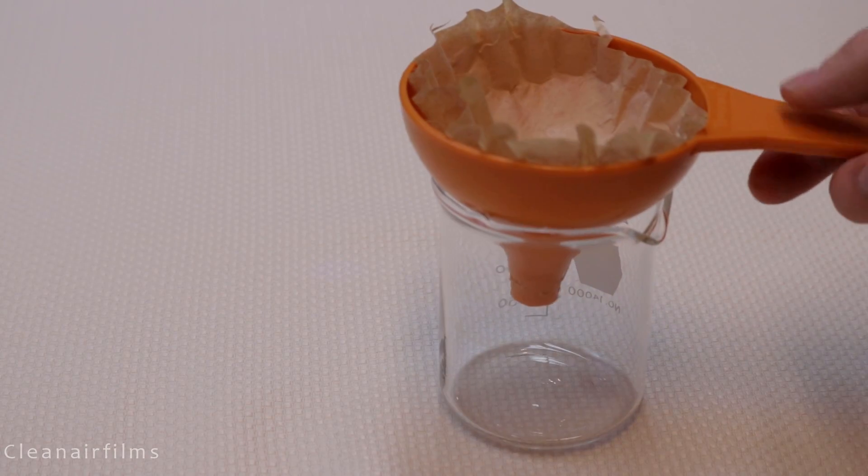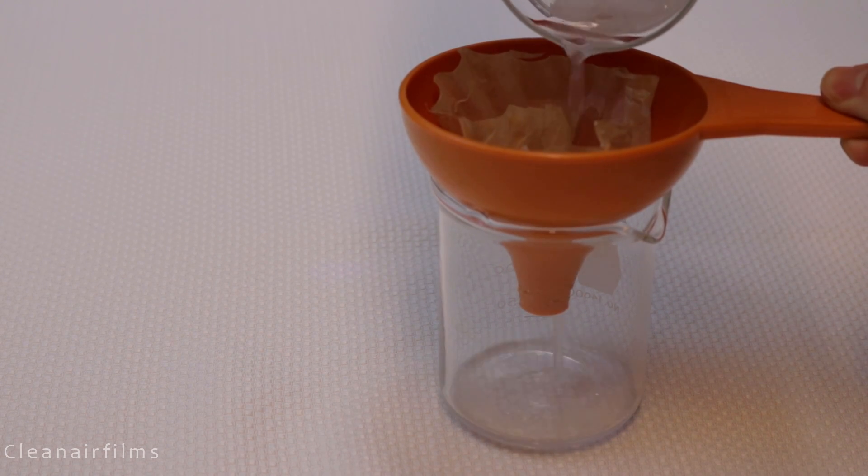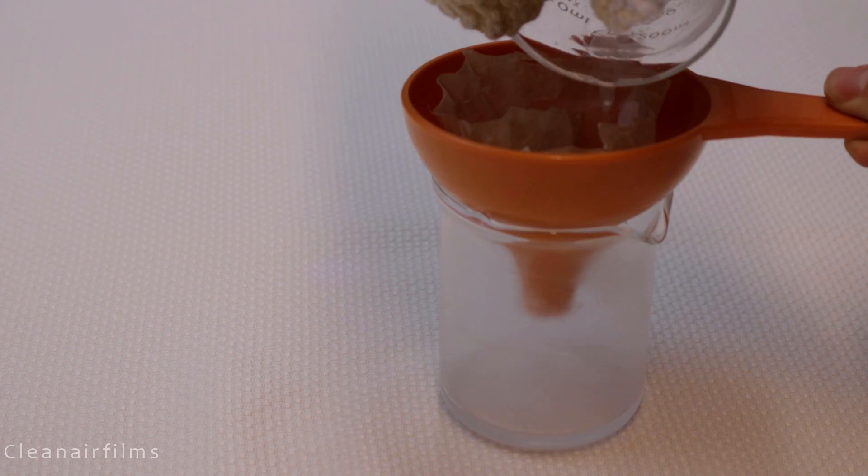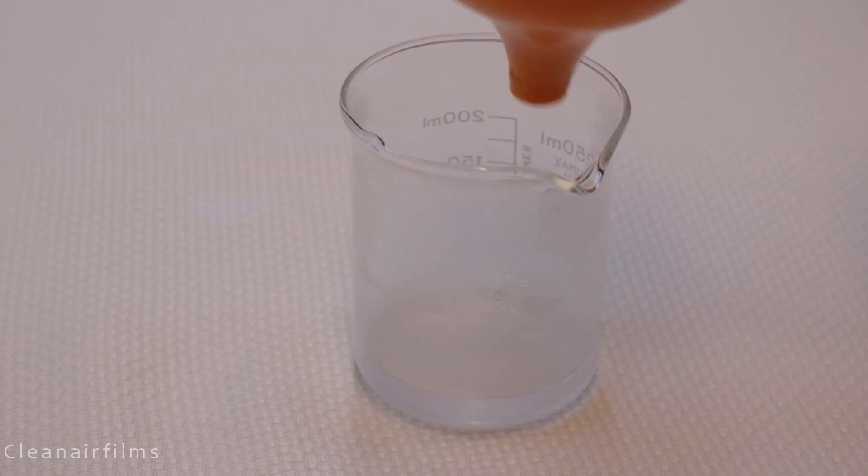When it is heated, take the beaker of salt water off the stove and pour it through a filter. This will remove any undissolved salt from the solution. We now have a saturated solution of salt water.